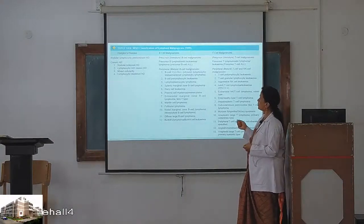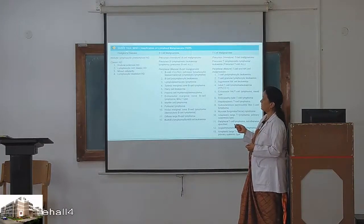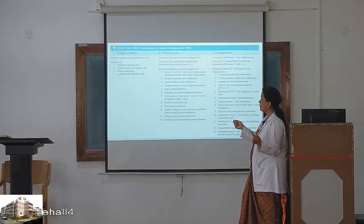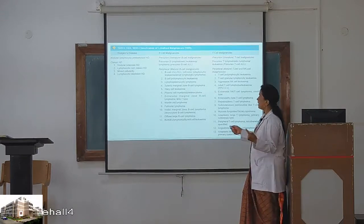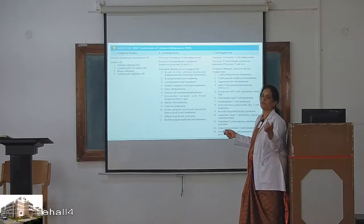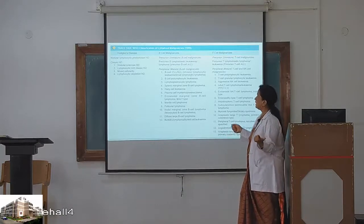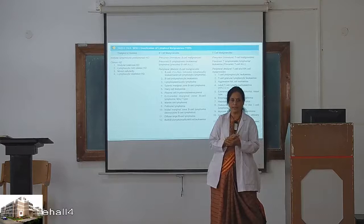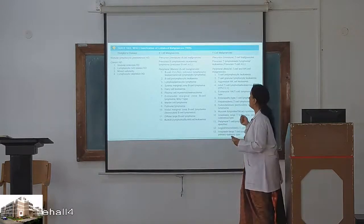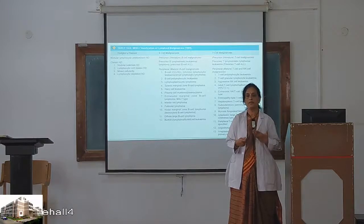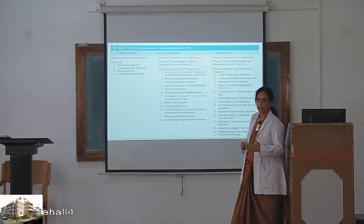The WHO classification of lymphoid malignancies classifies them as Hodgkin's disease, B-cell malignancies, and T-cell malignancies. Just remember the first one — Hodgkin's disease — which has the peculiarity of RS cells and a different prognosis, treatment, and behavior compared to non-Hodgkin's. Then B-cell and T-cell malignancies are lymphomas derived from B-lymphocytes and T-lymphocytes respectively.